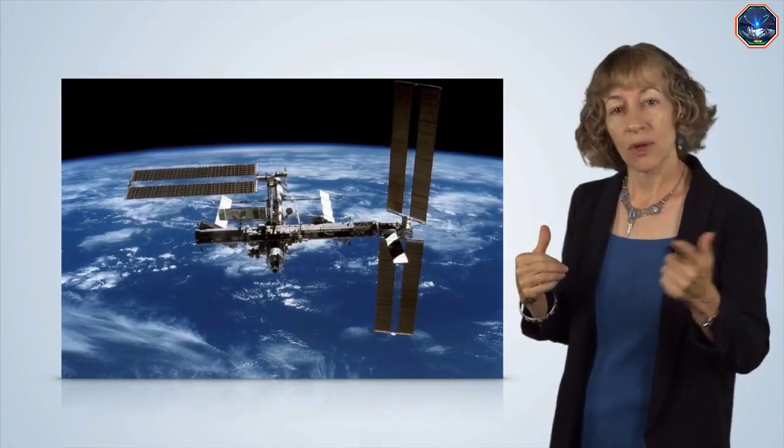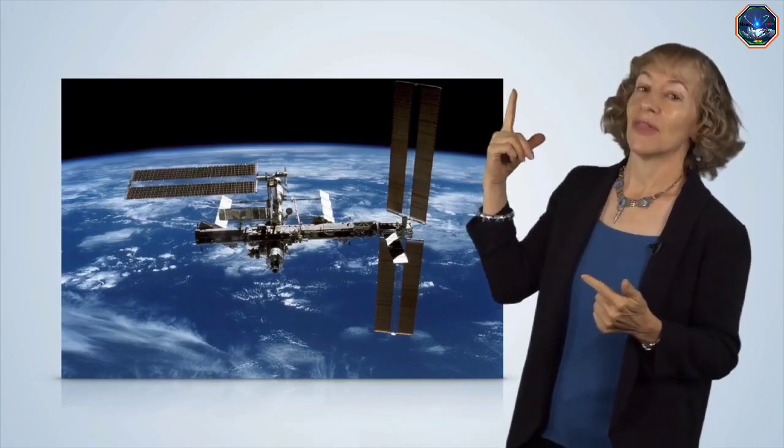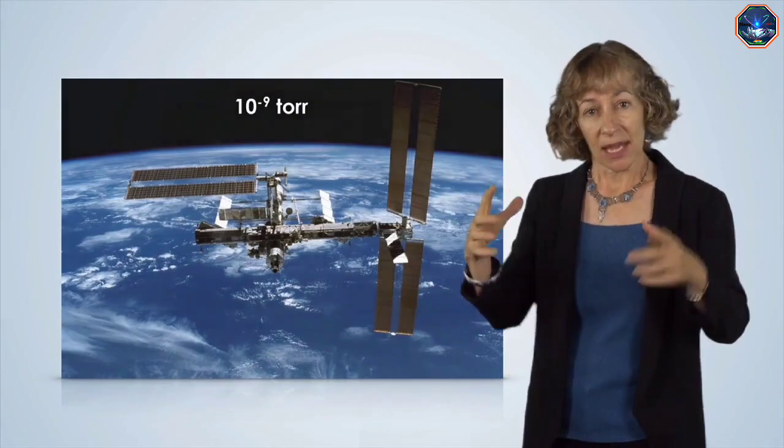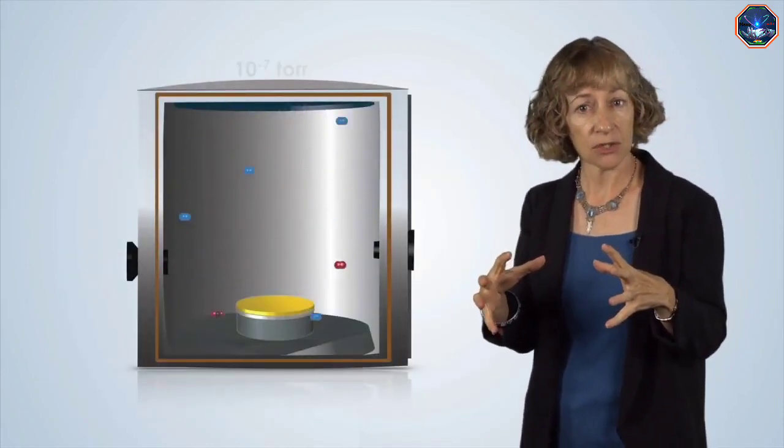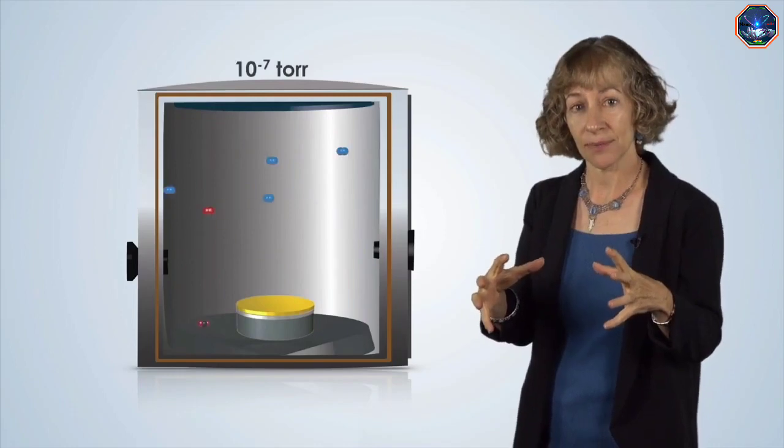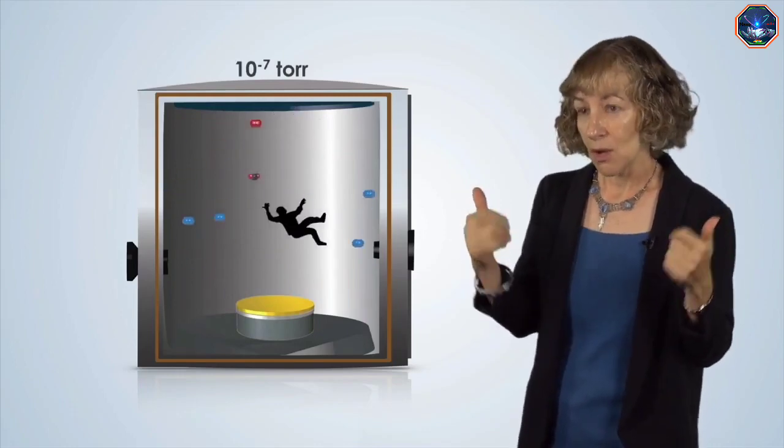How does that high vacuum that we use for thin film deposition compared to outer space? Well, at the International Space Station, the pressure is 10 to the minus 9 torr. In our high vacuum systems for nanofabrication, we typically use pressures of 10 to the minus 7 torr. What's the other difference? Well, there's gravity in our vacuum systems.